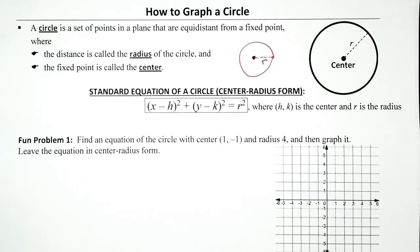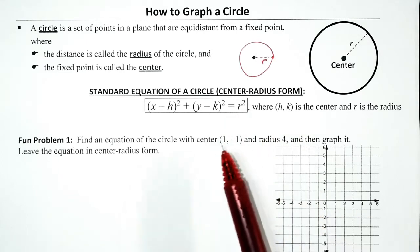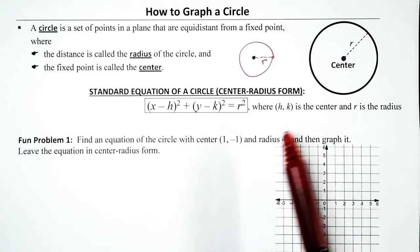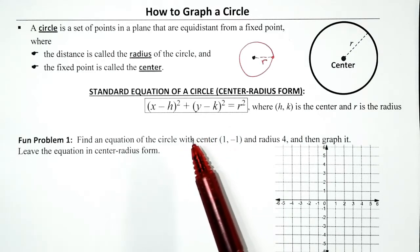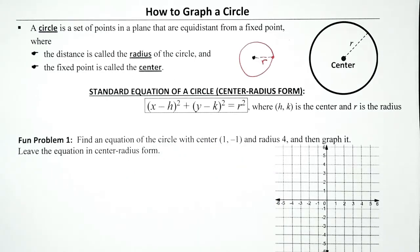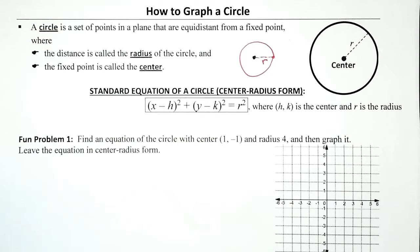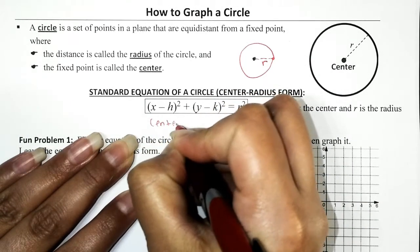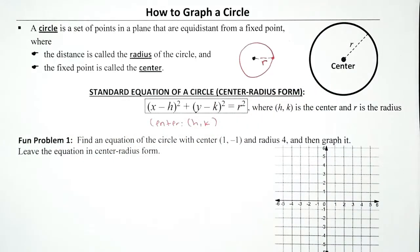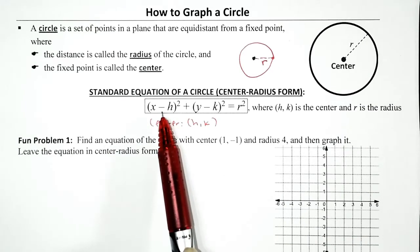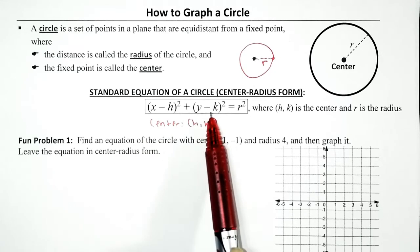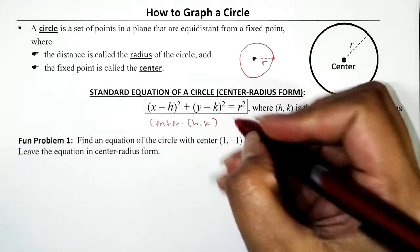Today we're going to focus on graphing circles. The first problem will say: graph the circle and write the equation. We'll focus on center-radius form. The standard equation of a circle in center-radius form is: (x - h)² + (y - k)² = r². The true variables are x and y. The center is given by (h, k) — h follows the subtraction sign in the first binomial, k follows the subtraction sign in the second binomial — and r is the radius.